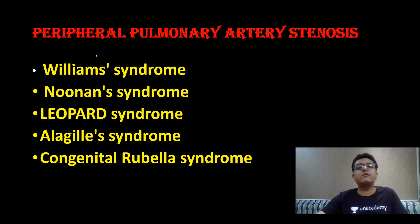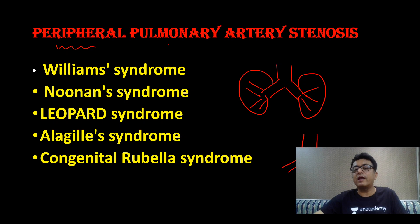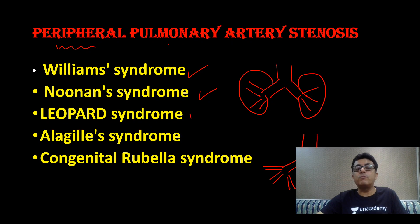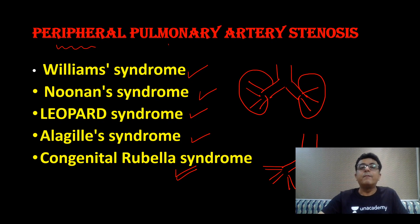A question also comes: which other syndromes have peripheral pulmonary artery stenosis? The pulmonary artery divides into right and left going into the lungs — sometimes these branches have stenosis, known as peripheral pulmonary artery stenosis. It is present in Williams syndrome, Noonan syndrome, Leopard syndrome, Alagille syndrome, and congenital Rubella syndrome. These are all syndromes associated with peripheral pulmonary artery stenosis.